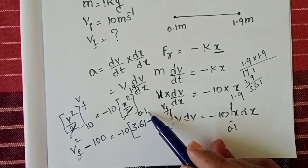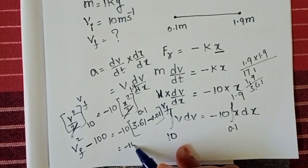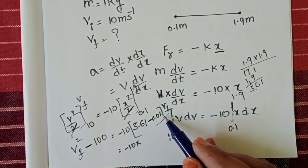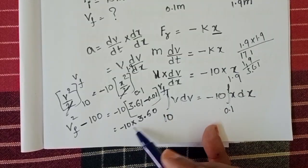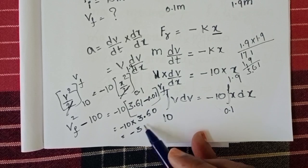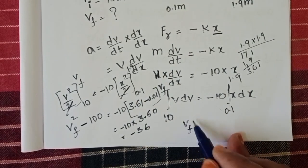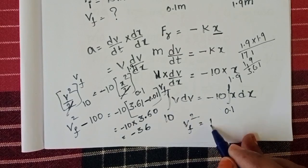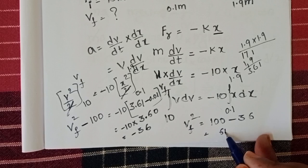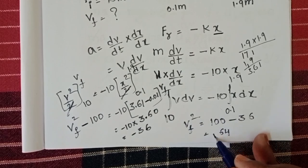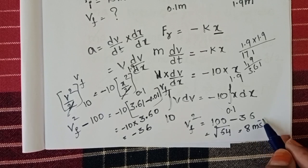Lower limit is 0.1. 0.1 whole square becomes 0.01. Minus 10 into 3.61 minus 0.01 becomes 3.60. 10 into 3.6 becomes 36. In LHS, vf square and minus 100 goes to RHS side. It becomes plus 100. 100 minus 36 is 64. And this square goes to RHS side square root. That equals 8 meter per second.